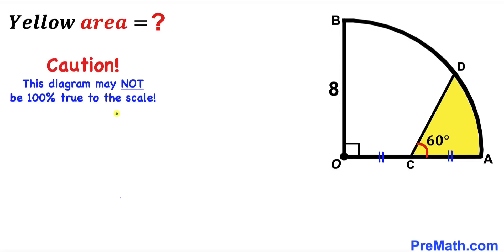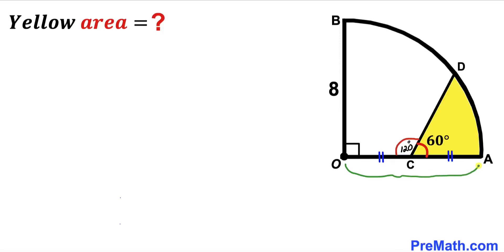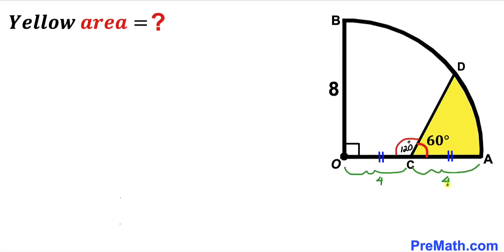Keep in mind that this figure may not be 100% true to scale. We know that the straight angle is 180 degrees and this angle is 60 degrees, so therefore this remaining angle has got to be 120 degrees. We know that radius AO of this quarter circle is 8 units, and since point C is the midpoint, segment OC is going to be 4 units and likewise AC is 4 units as well.